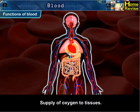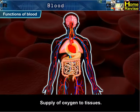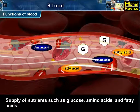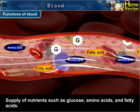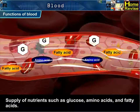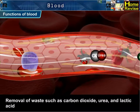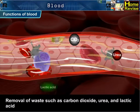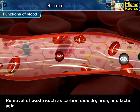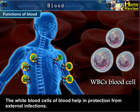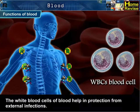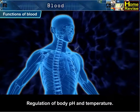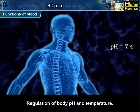Functions of blood include: supply of oxygen to tissues; supply of nutrients such as glucose, amino acids, and fatty acids; removal of waste such as carbon dioxide, urea, and lactic acid. White blood cells help in protection from external infections, and blood also regulates body pH and temperature.